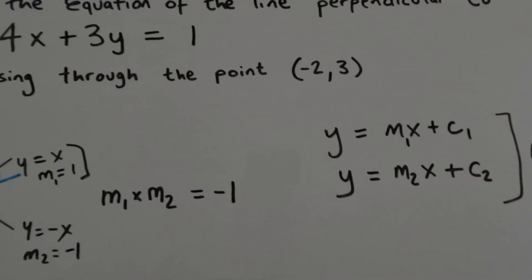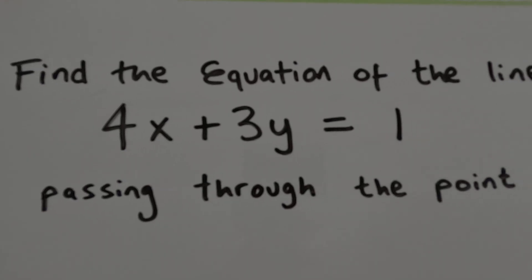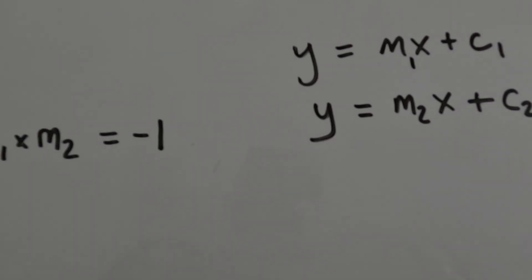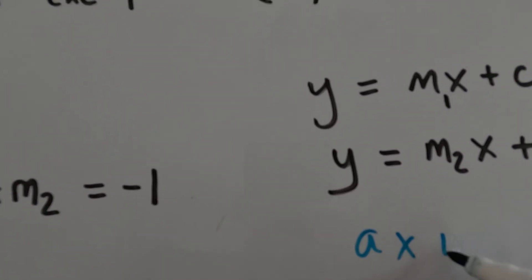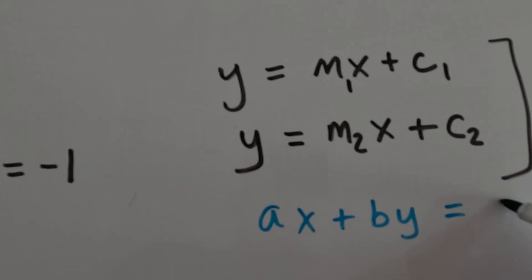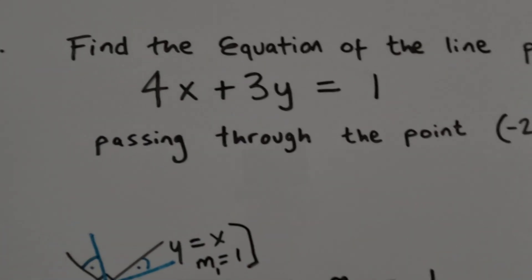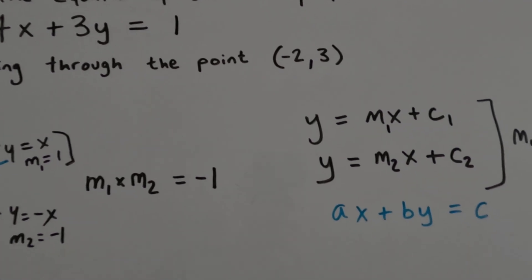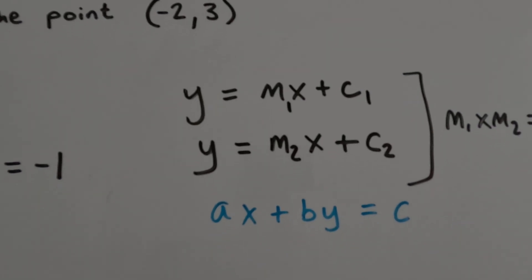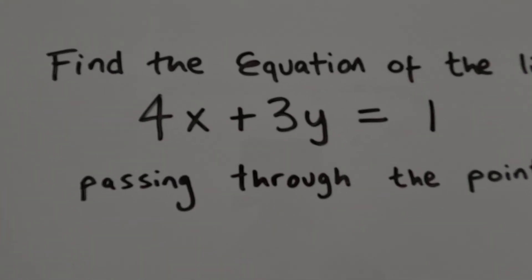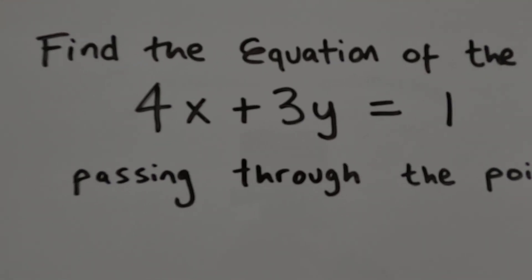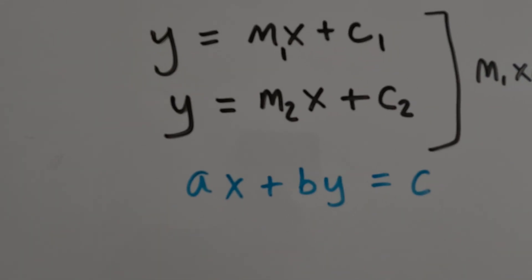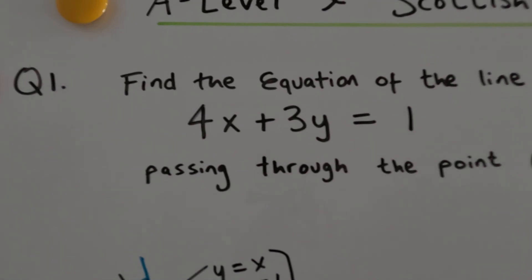Let's get into the question itself. It's written in the form Ax plus By equals C. When it says find the equation of the perpendicular line, we could write it in the same form or in y equals mx plus c — it's entirely up to you. I'm going to write the answer in the same form as the question, Ax plus By equals C, just to keep consistency.